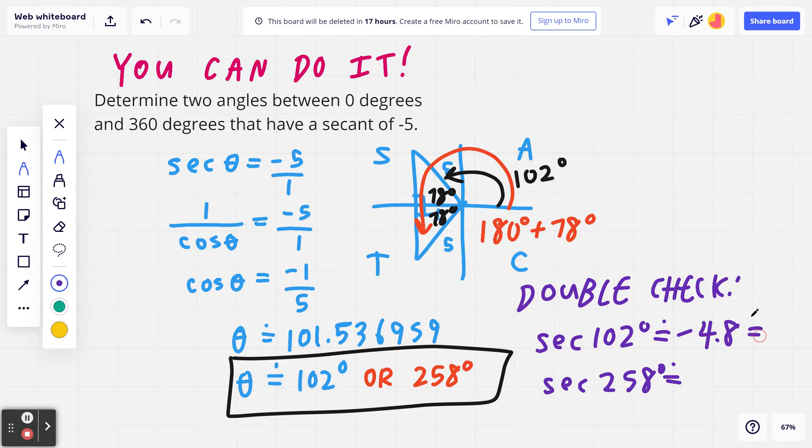Because you are rounding the answer to 102 degrees, you're not going to get exactly negative 5, but it'll be very close to that number. Likewise, if I take 1 divided by cosine of 258, it's going to be negative 4.8, which is approximately negative 5. So by spending one extra minute, you can double check your answers to verify that these answers make sense.